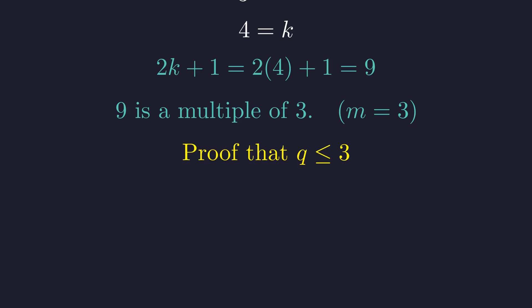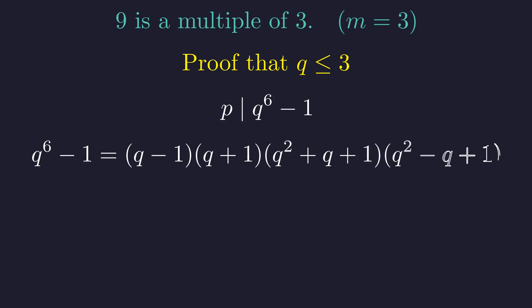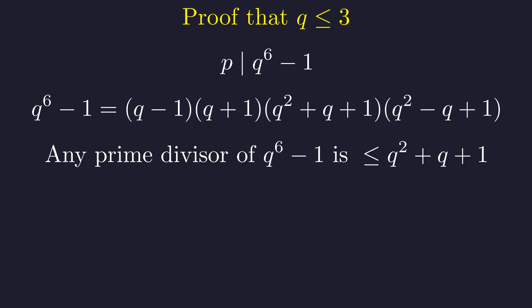Now we will prove that no prime q greater than or equal to 5 can give a solution, which completes our uniqueness proof. From our equation, p cubed minus p equals q to the 7th minus q. Since p and q are different primes, p must divide q to the 6th minus 1. We can factor q to the 6th minus 1 into these four terms. Any prime divisor of this expression must divide one of these factors. The largest of these factors is q squared plus q plus 1. So any prime divisor of q to the 6th minus 1 must be less than or equal to this value. Since p divides q to the 6th minus 1, we must have p is less than or equal to q squared plus q plus 1. This gives us an upper bound for p.